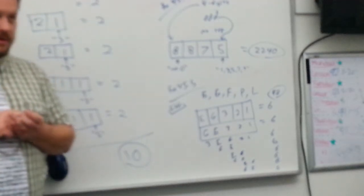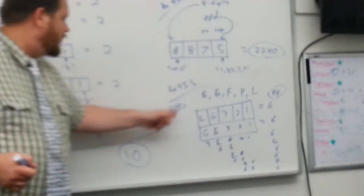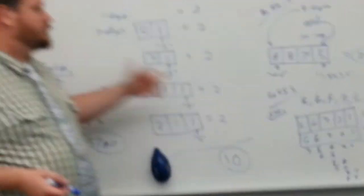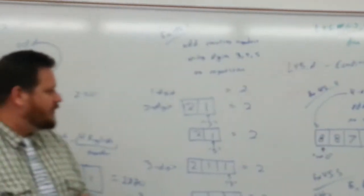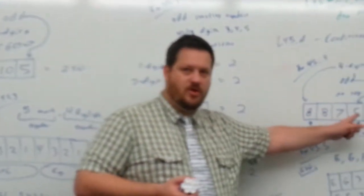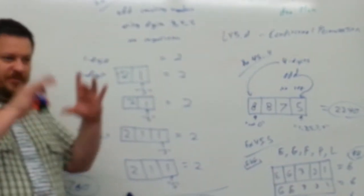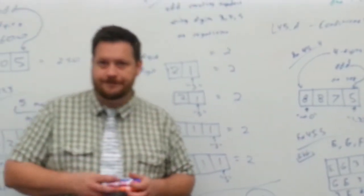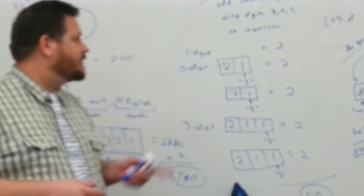To recap: there really is no formula for conditional permutations. You have to read the problem, make note of whatever the restrictions or conditions are, and draw your boxes accordingly. Sometimes you'll have one set of boxes; other times you'll have multiple sets that you need to add together. Read those problems carefully — and that is conditional permutations.